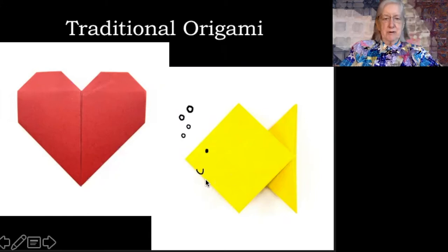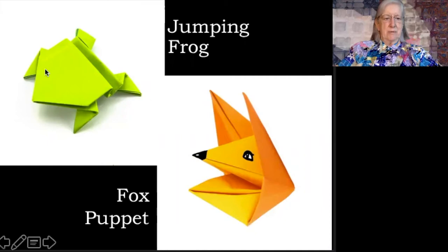Some of the forms of origami are made to play with children and can be quite dynamic. There's a jumping frog that you can put on the table and make jump. And a fox puppet, especially when you highlight it with a little bit of decoration.